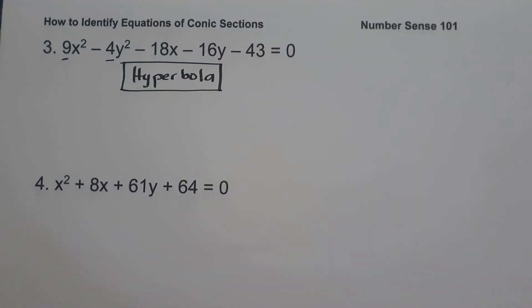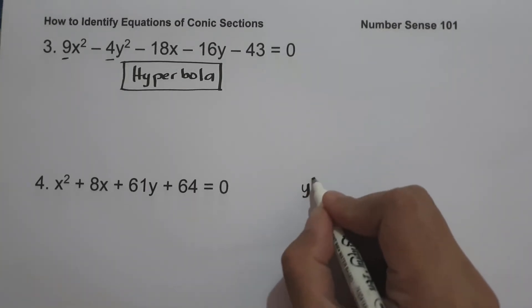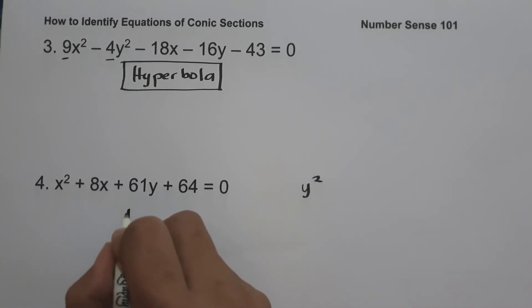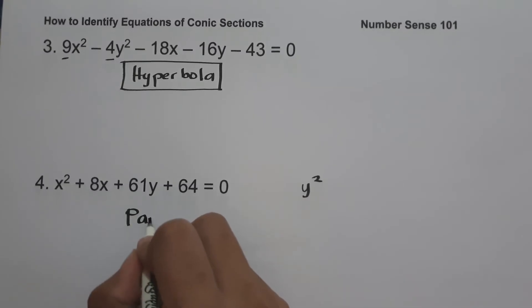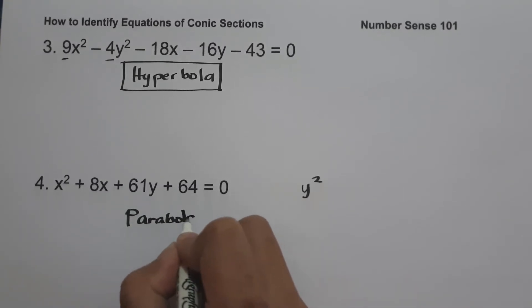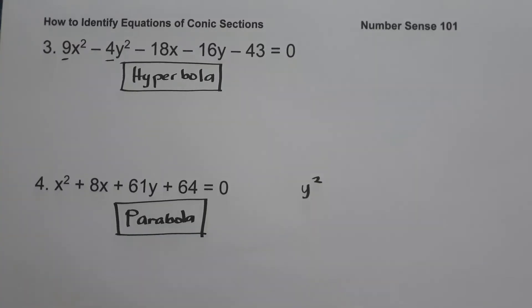On number four, we have x² + 8x + 61y + 64 = 0. Since we don't have y², we can say that this equation is a parabola.